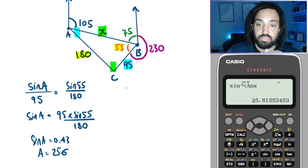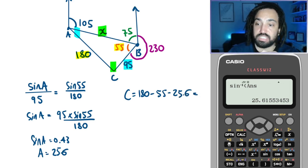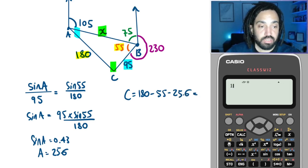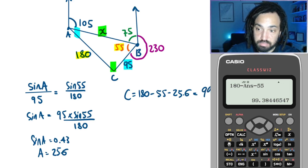Okay, so now we can find the green angle. So the green angle at C is obviously 180 minus 55 minus 25.6, because angles in the triangle add to 180. So I do 180 minus that previous answer, and also minus 55. And that gives us 99.4.